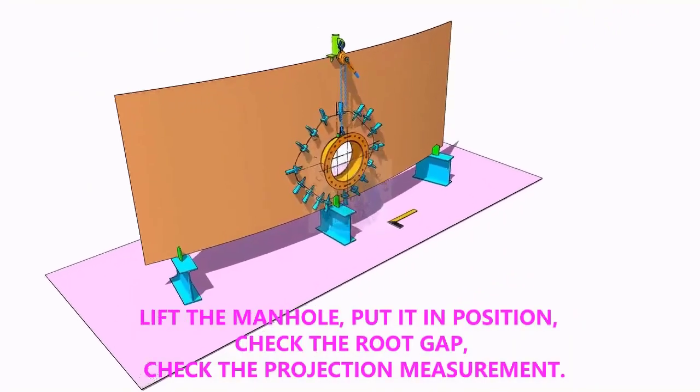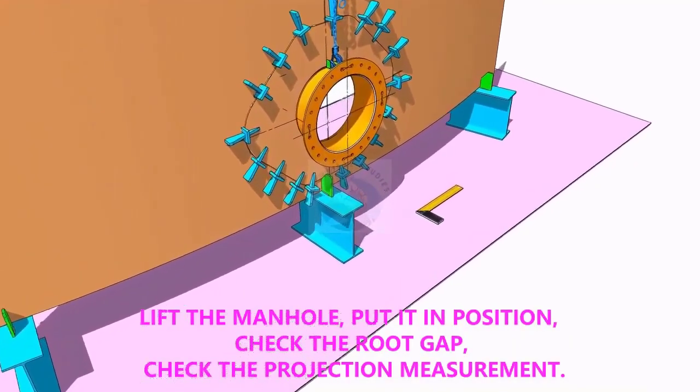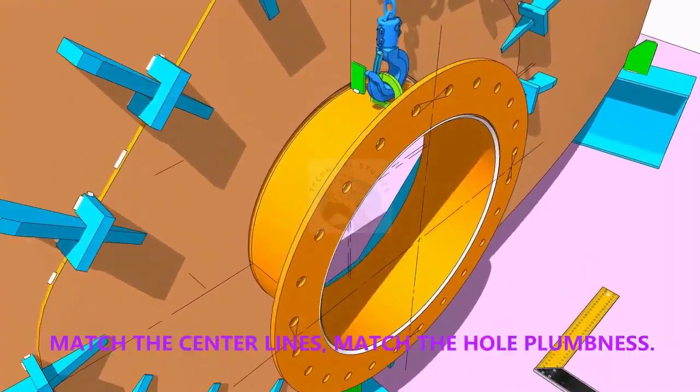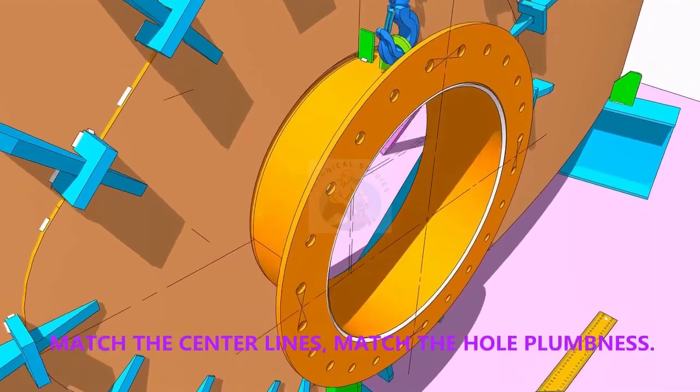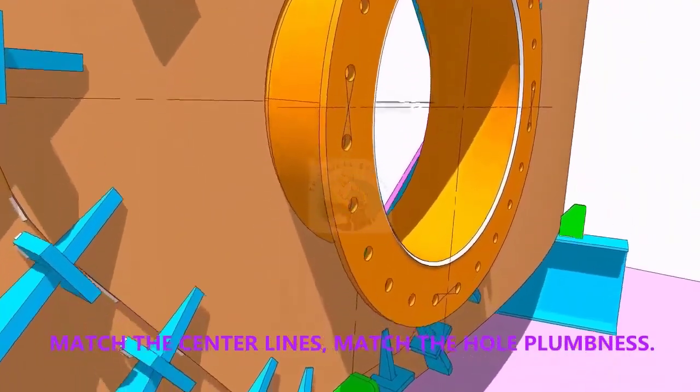Put the manhole in its position. Correct the plumbness. Correct the projection of the manhole. Correct the gap. Check again the plumbness.